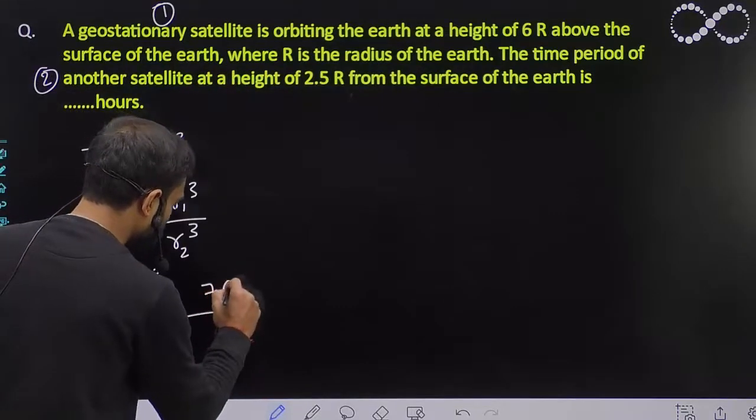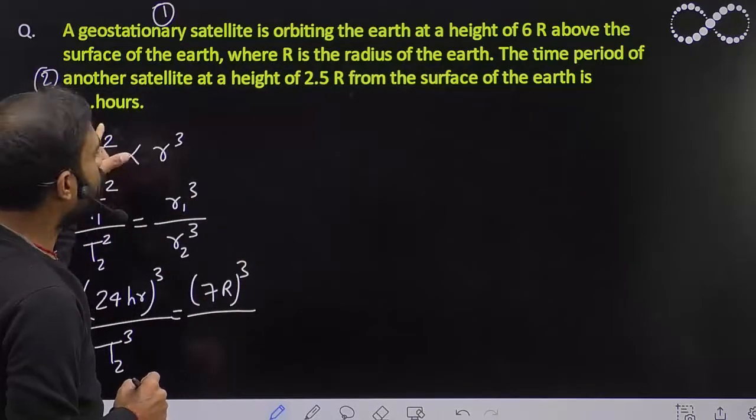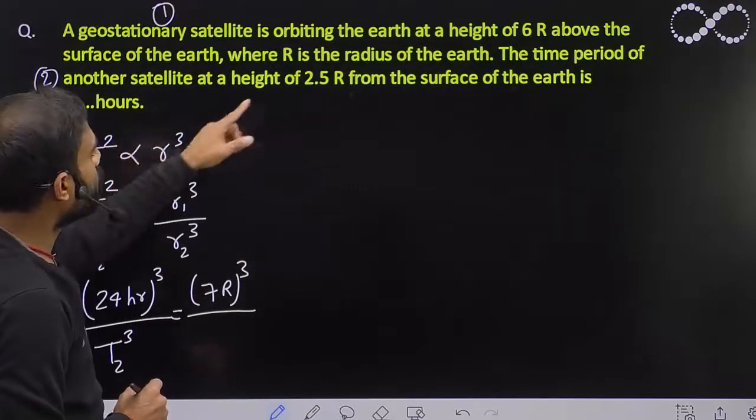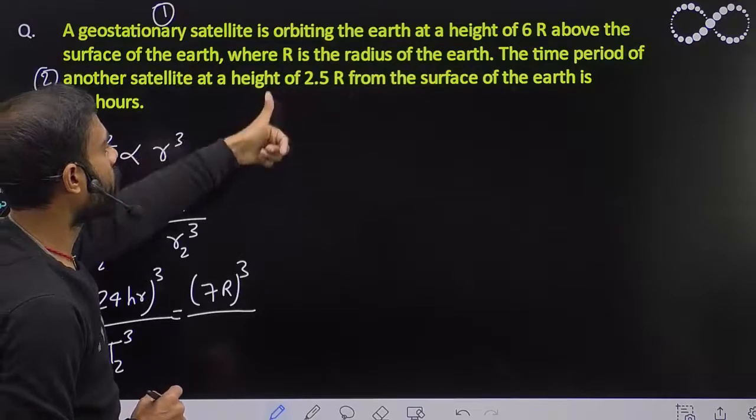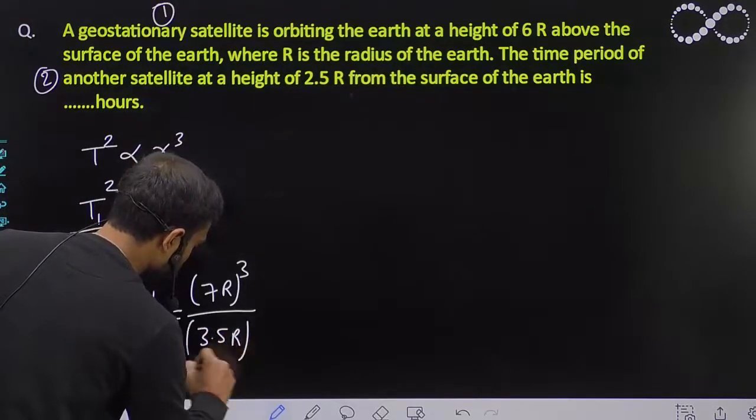That will be 7R cubed divided by the radius of another satellite. The height of another satellite is 2.5, so 2.5R plus capital R, that will be 3.5R cubed of this.